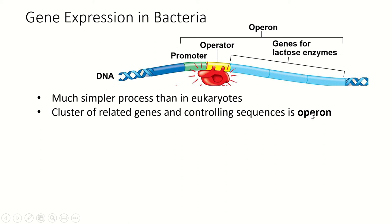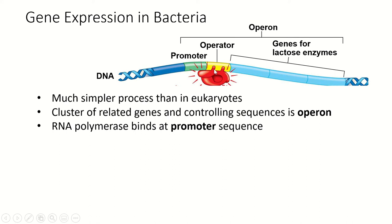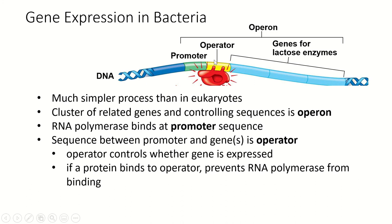RNA polymerase — our enzyme that transcribes DNA — is going to bind to the promoter. It reads along the DNA until it gets to a promoter and then travels along. There's an operator between the promoter and the gene, and this operator controls whether these genes actually get expressed or not. If there is a protein bound to the operator, then the RNA polymerase can't bind and can't read the operator, and if it can't read the operator it can't read the genes either.